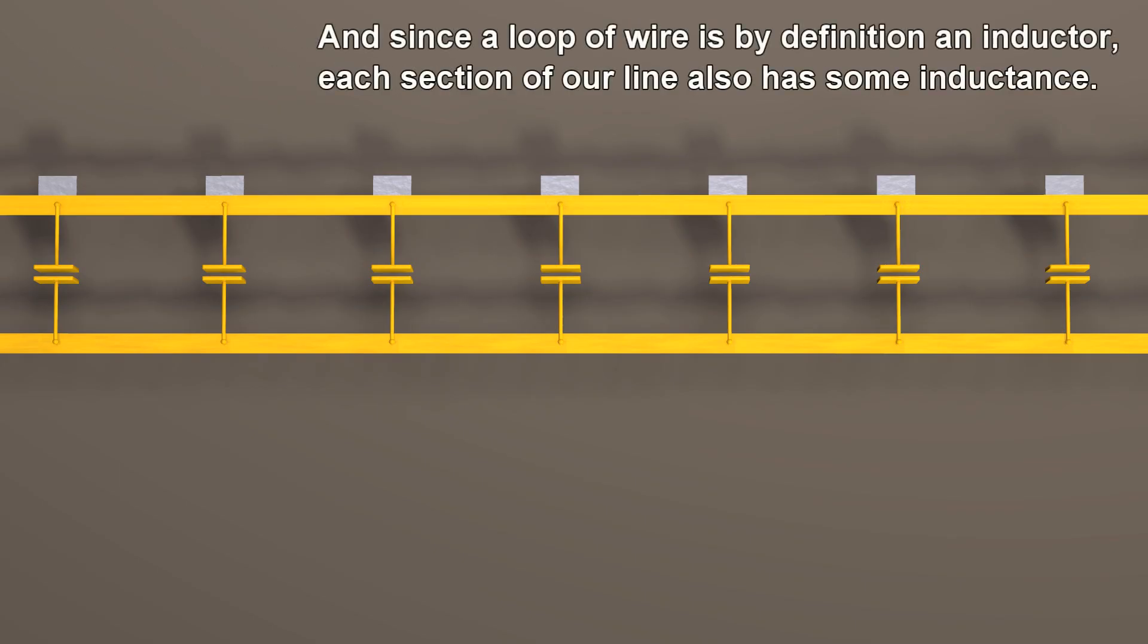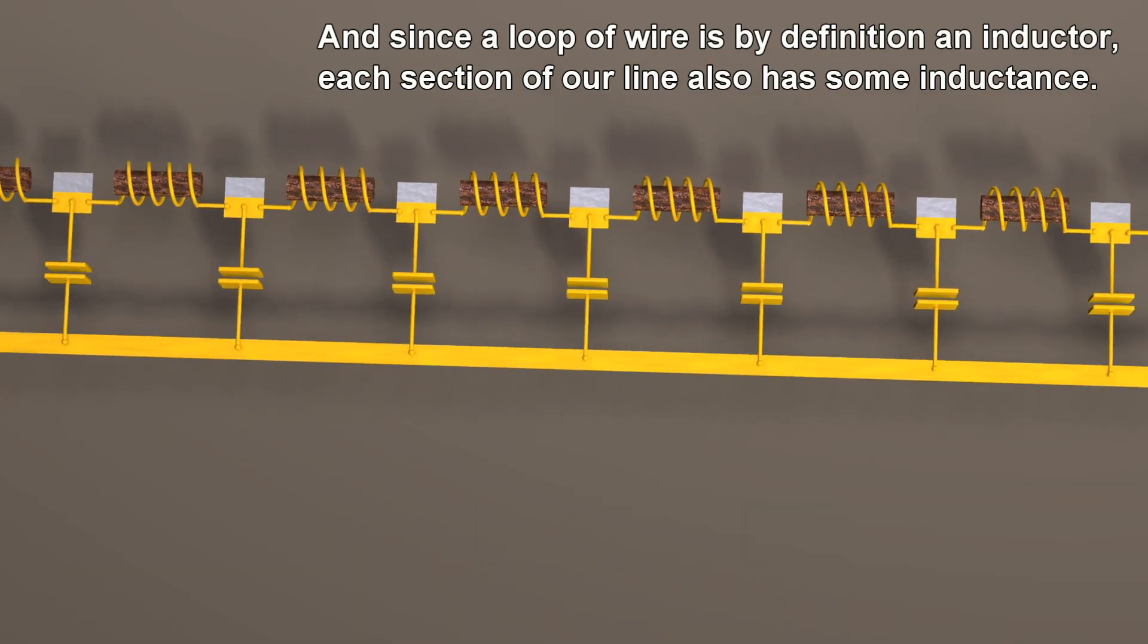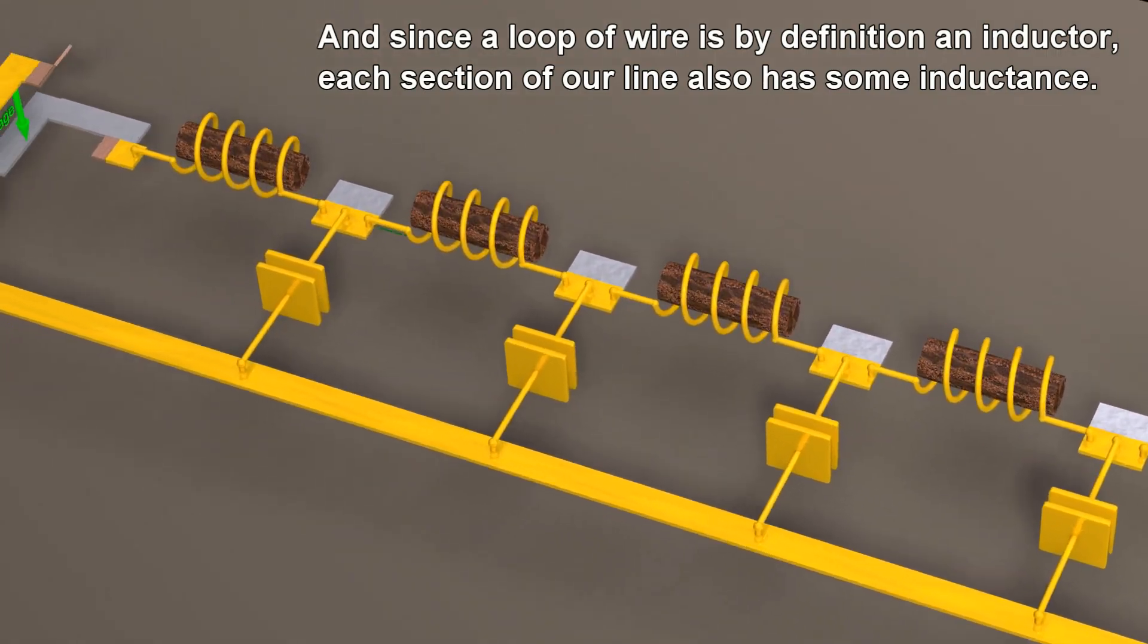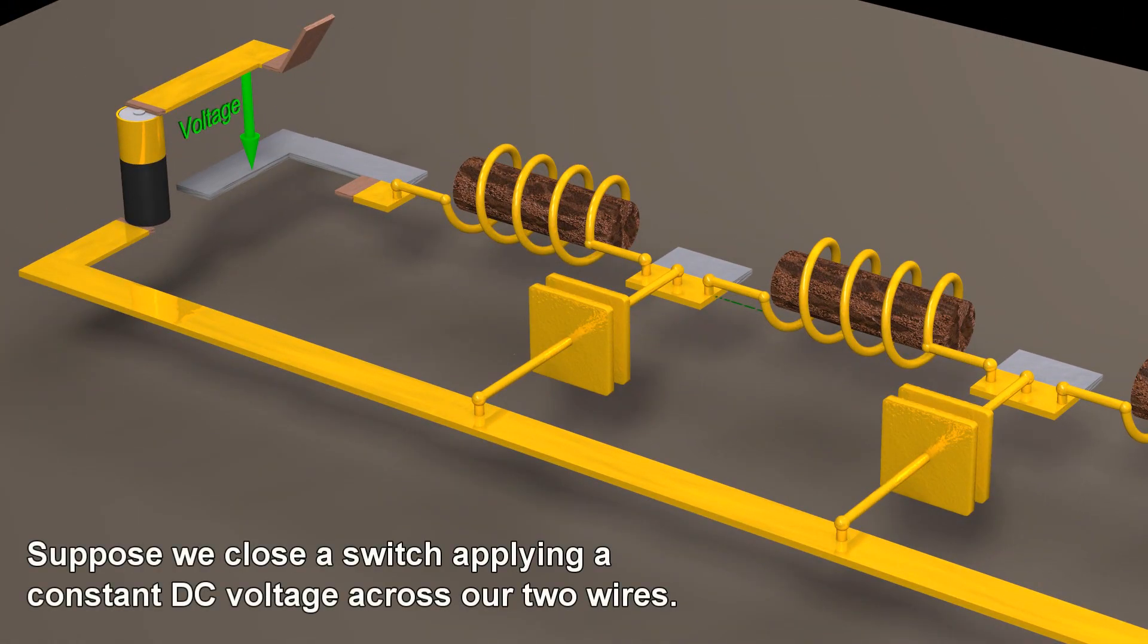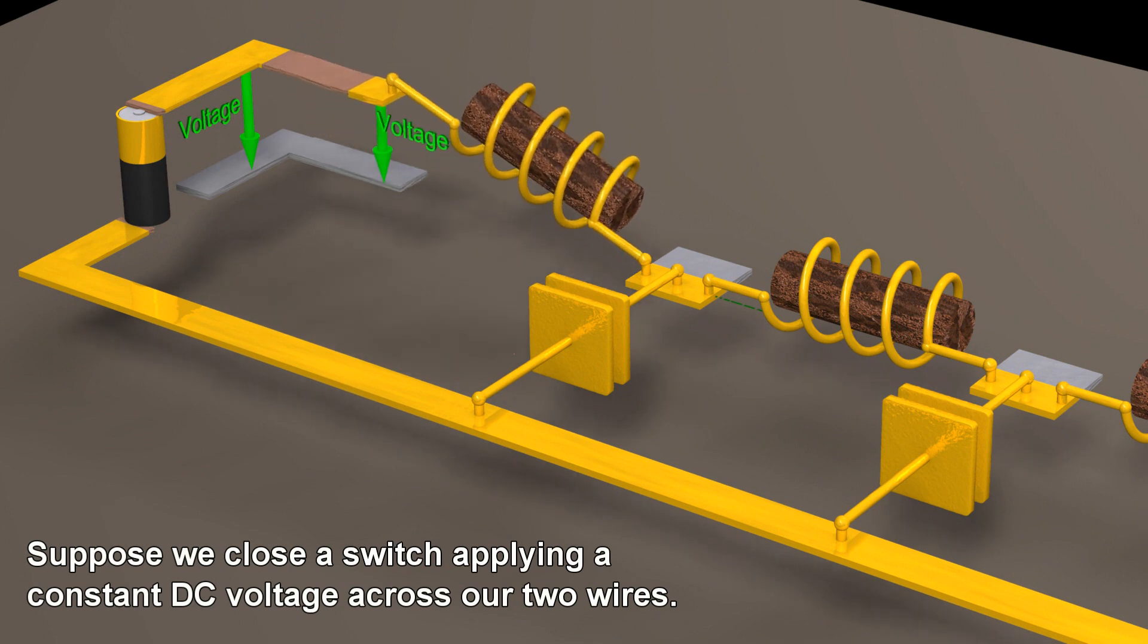And since a loop of wire is by definition an inductor, each section of our line also has some inductance. Suppose we close a switch applying a constant DC voltage across our two wires.